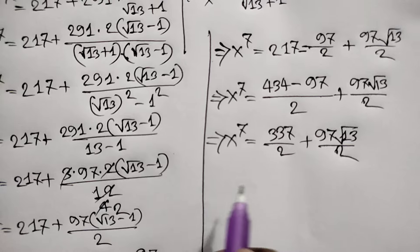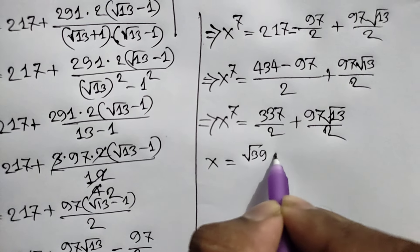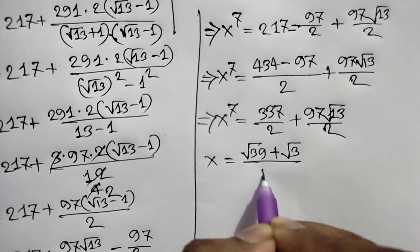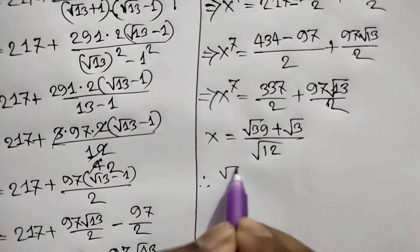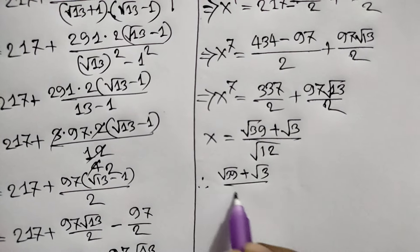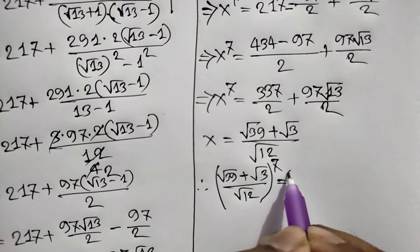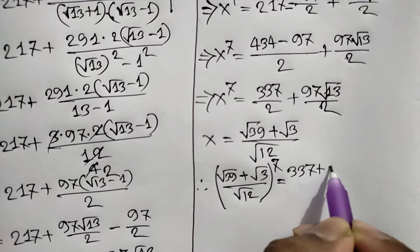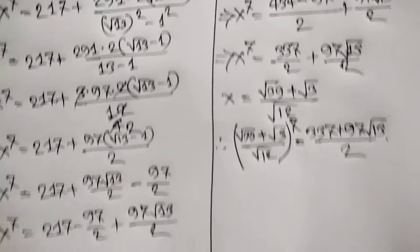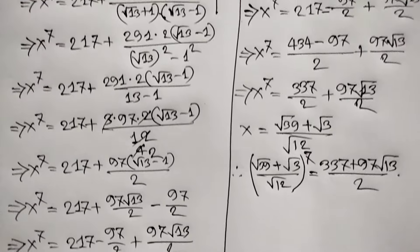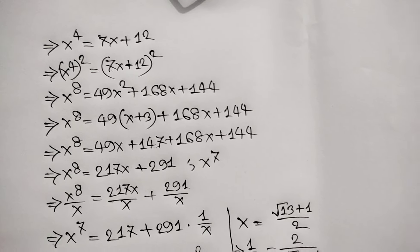Recalling that x equals (square root of 39 plus square root of 3) over square root of 12, we can write the final answer: ((square root of 39 plus square root of 3) over square root of 12) to the power 7 equals (337 plus 97 times square root of 13) over 2. That is our final answer. Thanks for watching — if you like this video please subscribe to my channel, and see you in the next video, bye bye.